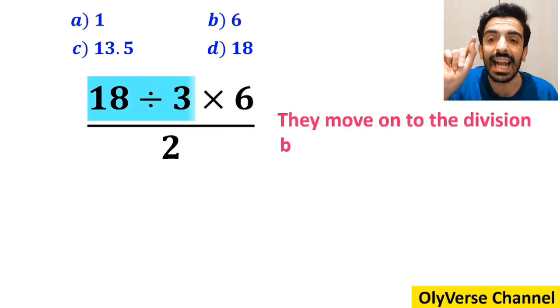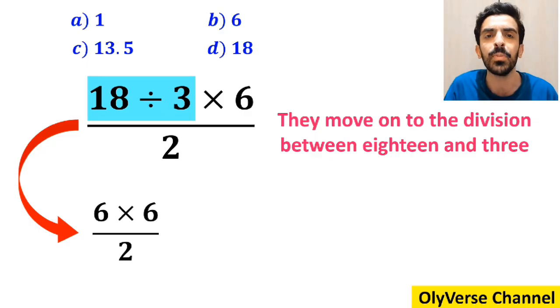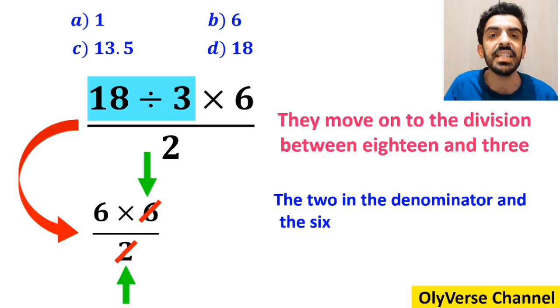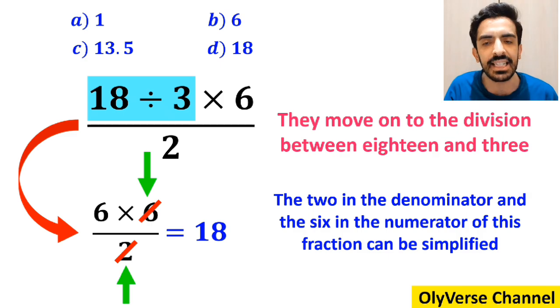And the next step, they move on to the division between 18 and 3, simplifying this expression to 6 multiplied by 6 over 2. Then they say the 2 in the denominator and the 6 in the numerator can be simplified and the final answer will be 18.